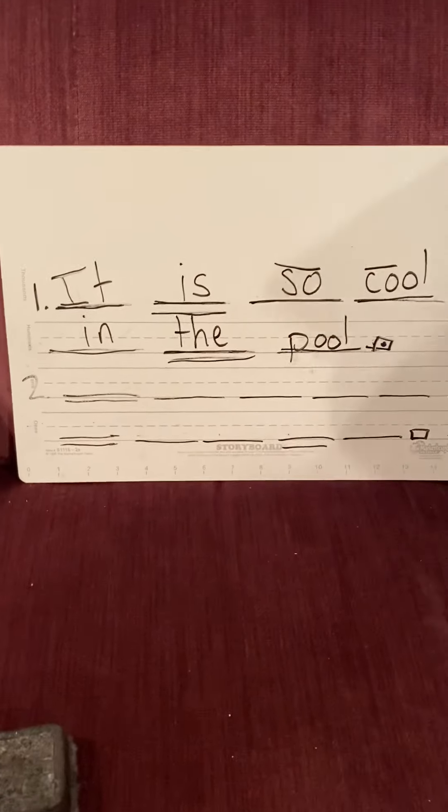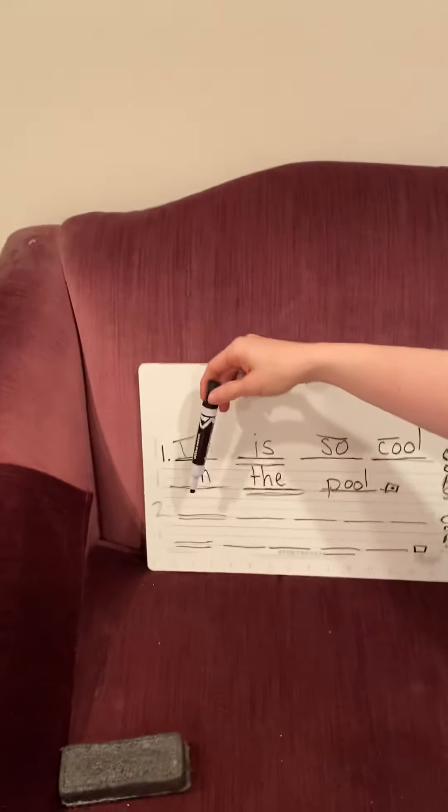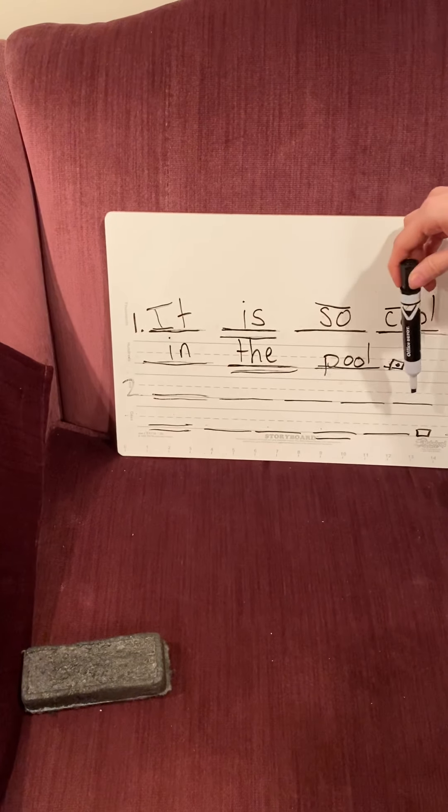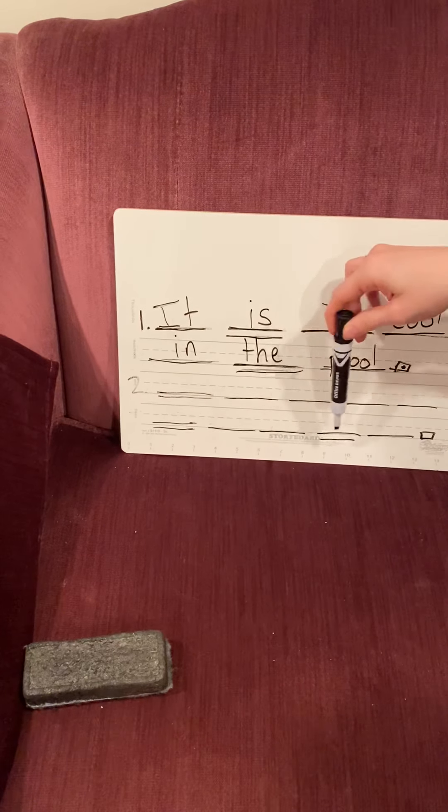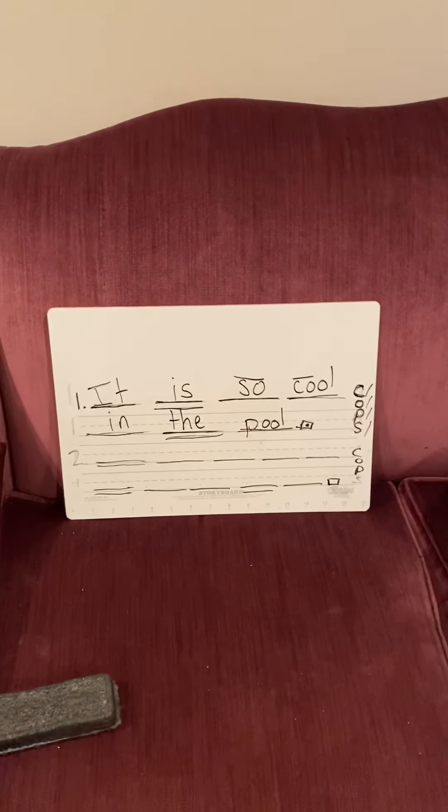Our second sentence: the rooster went out on a roof at the zoo. Pound it with me. The rooster went out on a roof at the zoo. Remember, rooster is a two syllable word, but it's still one word. Let's tap our lines. The rooster went out on a roof at the zoo. Pause it. And if you need to go back and hear the sentence again, please do.